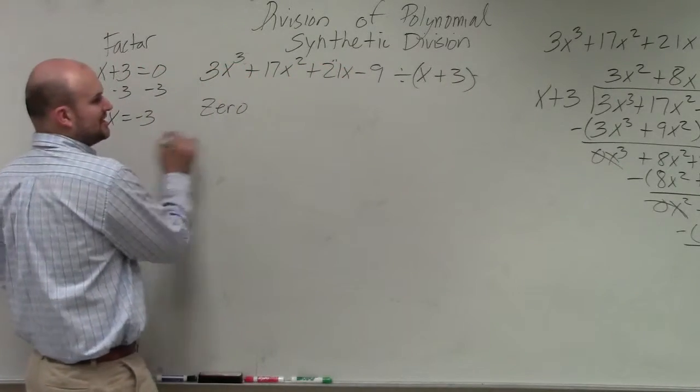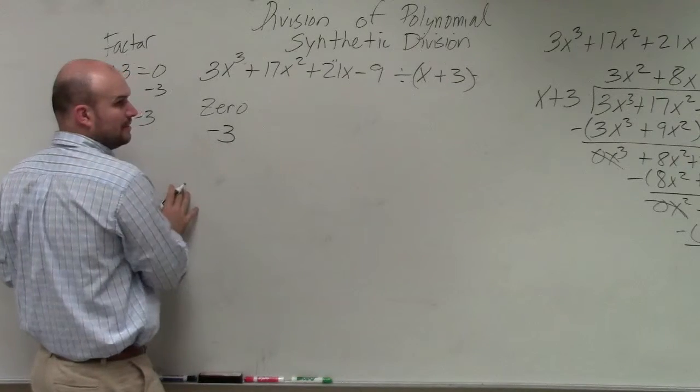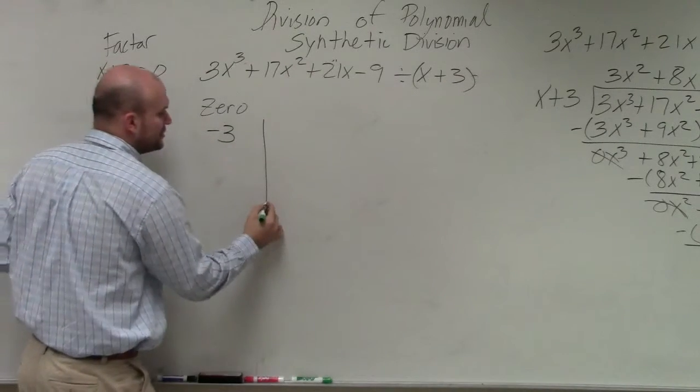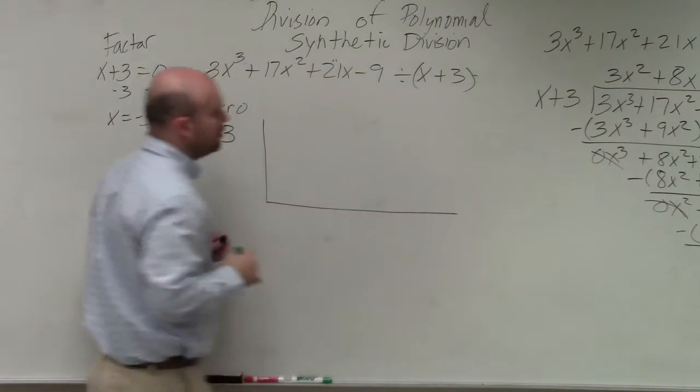So you take your zero, which in this case is negative 3. Then what you do is you kind of create this little L box.